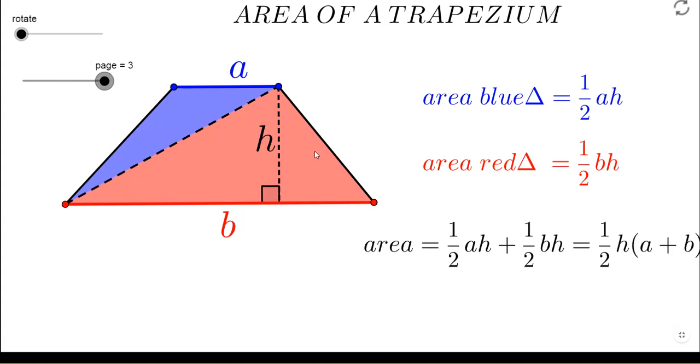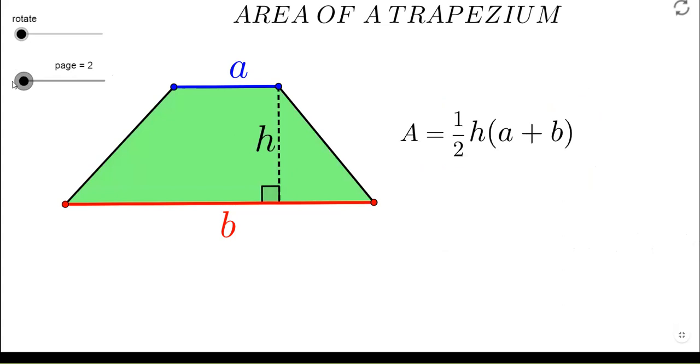Let's add both these areas to get the area of the trapezium. We add half a h plus half b h. We take half h common and we get a plus b in the brackets. So again the formula that we have derived is half h into sum of parallel sides.